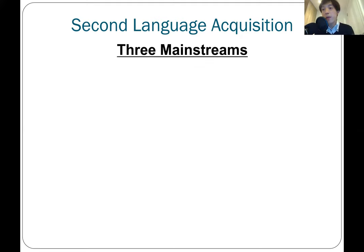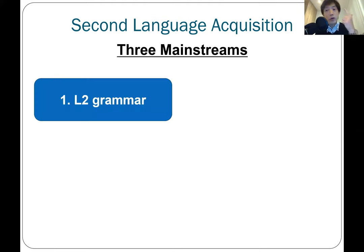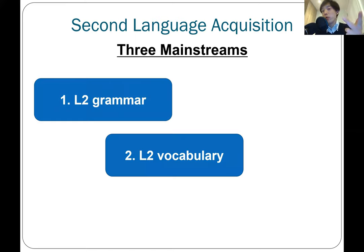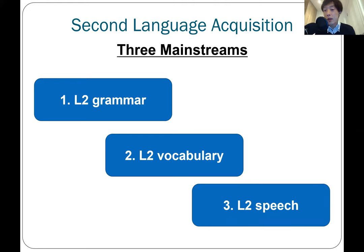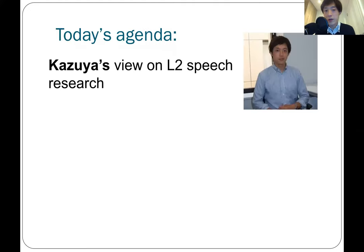SLA has three main areas. Number one, second language grammar. Number two, second language vocabulary. Number three, second language speech. And my specialty lies in second language speech. So in this video, I'm going to talk about second language speech research, again focusing on my own projects.